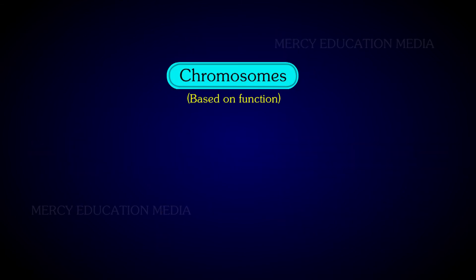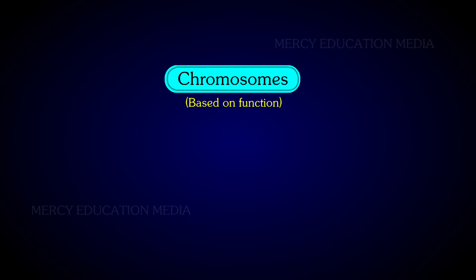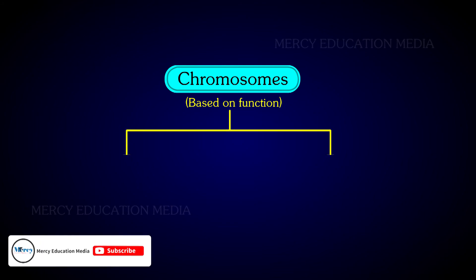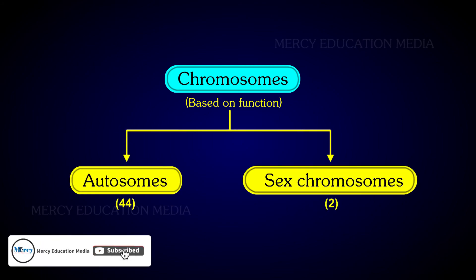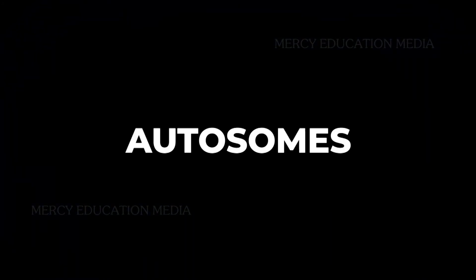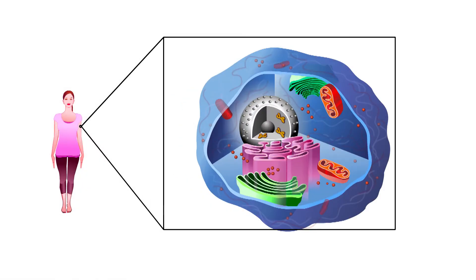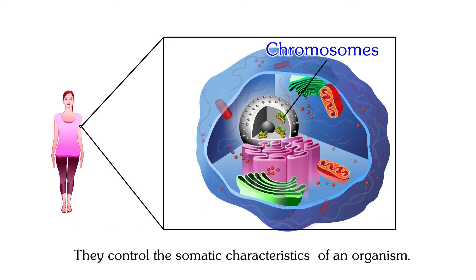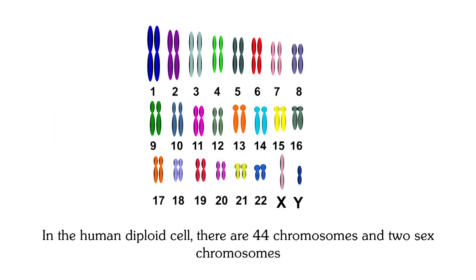There are two types of chromosomes based on their function: autosomes and sex chromosomes. Autosomes are present in the cells of organisms and control the somatic characteristics of an organism. In the human diploid cell, there are 44 autosomes and 2 sex chromosomes.